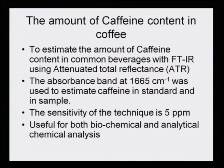We have to find out whether this method befits Beer-Lambert's law fundamentals or not. If it fits, then absorbance is directly proportional to concentration. The sensitivity of the technique is almost up to 5 ppm — 5 parts per million. This particular method of FTIR-ATR works for caffeine analysis and is useful for both biochemical and analytical chemical analysis. This FTIR-ATR combination is very good not only for caffeine analysis but is also well practiced for biochemical and analytical chemical analysis.